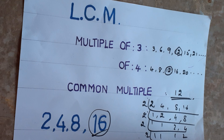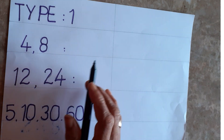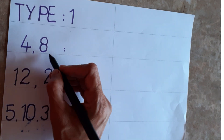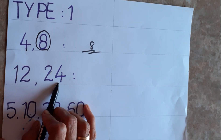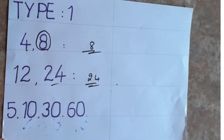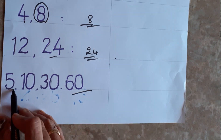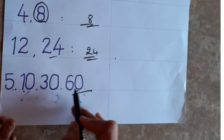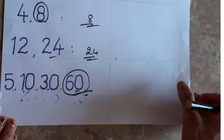There are three types of cases. Let me show more Type 1 examples. For 4 and 8: the highest number is 8, and 4 is divisible by 8, so LCM is 8. For 12 and 24: 24 is the highest, 12 divides into 24, so LCM is 24. For 5, 10, 30, and 60: the highest is 60, and 5, 10, and 30 all divide into 60, so LCM is 60.